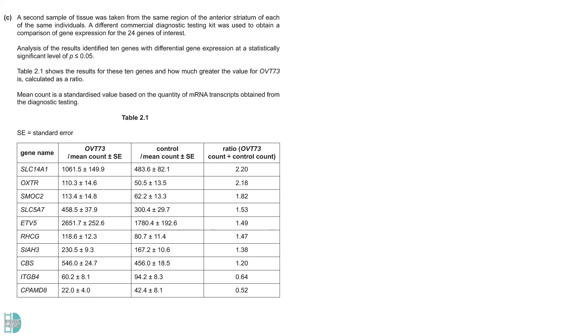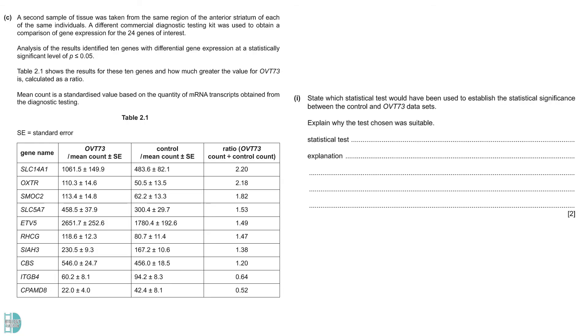Part C shows us the comparison of 10 genes of interest between the OVT73 and the control group. The difference between them is expressed in ratio. Part 1: State which statistical tests would have been used to establish the statistical significance between the data sets and explains why the test chosen was suitable. A T test should be used as we are comparing means between two samples with fewer than 30 values. On top of that, this is continuous data and has a normal distribution. You only need to have one of these points to get a mark.